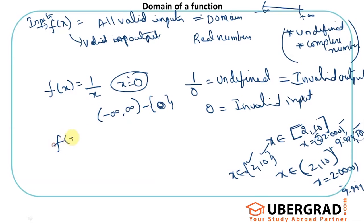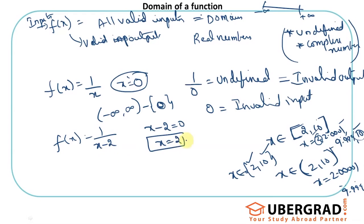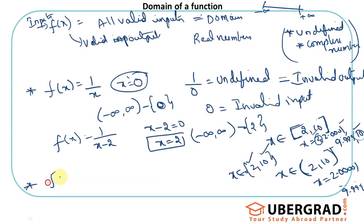A minor tweak: if f(x) = 1/(x-2), what is the domain? As long as the denominator is not 0, everything is fine. The denominator x-2 equals 0 when x = 2. So everything from minus infinity to infinity is valid except 2, because when x is 2 the denominator is 0, giving 1/0 which is an invalid output. This is one standard rule: the denominator must not be 0.